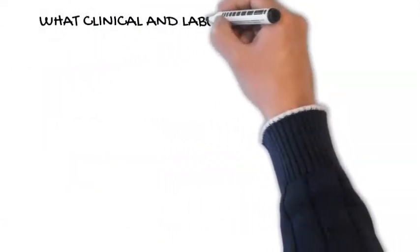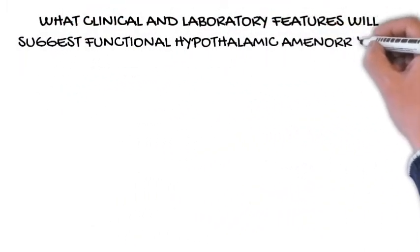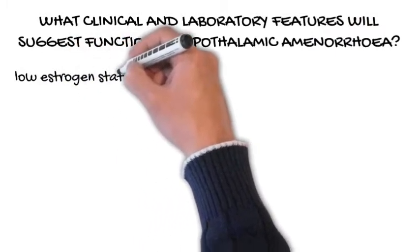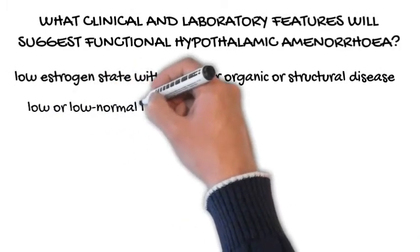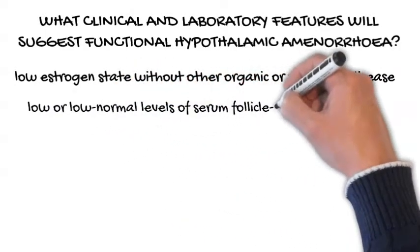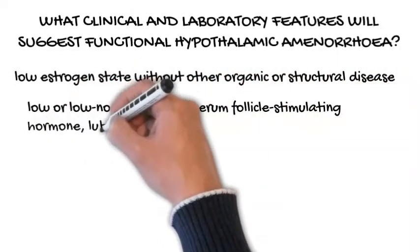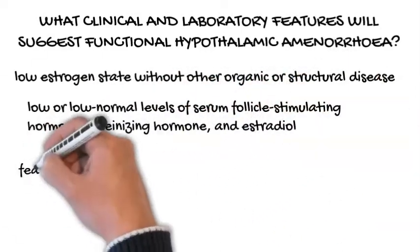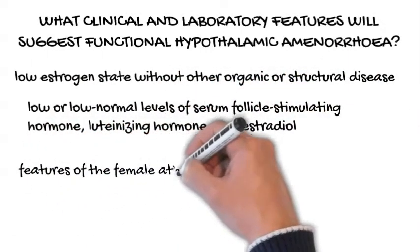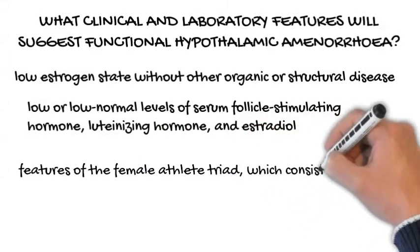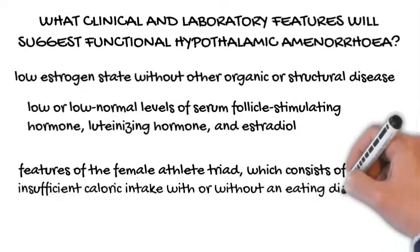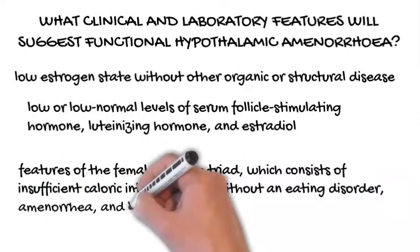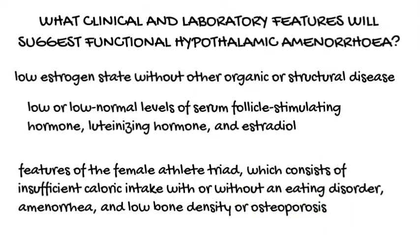What clinical and laboratory features will suggest functional hypothalamic amenorrhea? It is characterized by a low estrogen state without other organic or structural disease. Laboratory tests usually reveal low or low-normal levels of serum follicle-stimulating hormone, luteinizing hormone, and estradiol. Patients with functional amenorrhea may demonstrate the features of the female athlete triad, which consists of insufficient caloric intake with or without an eating disorder, amenorrhea, and low bone density or osteoporosis.